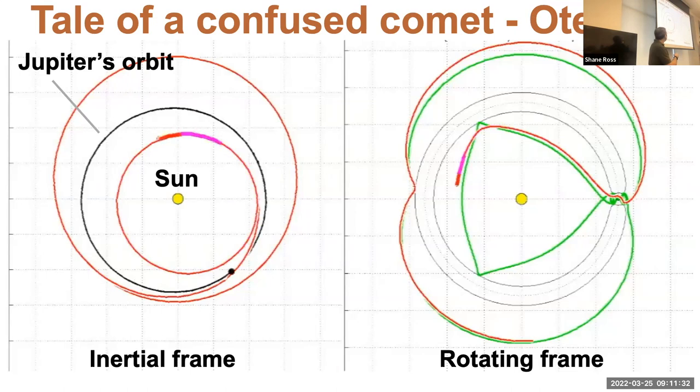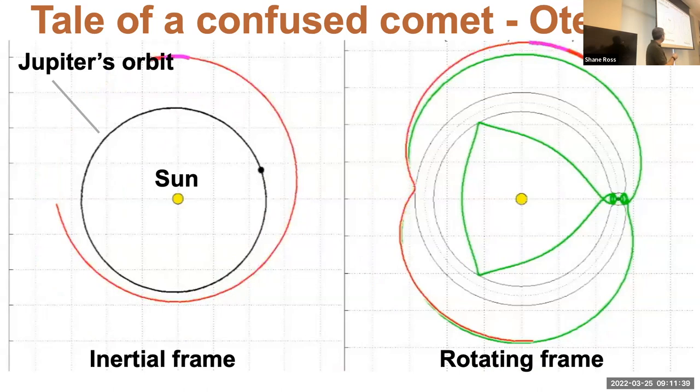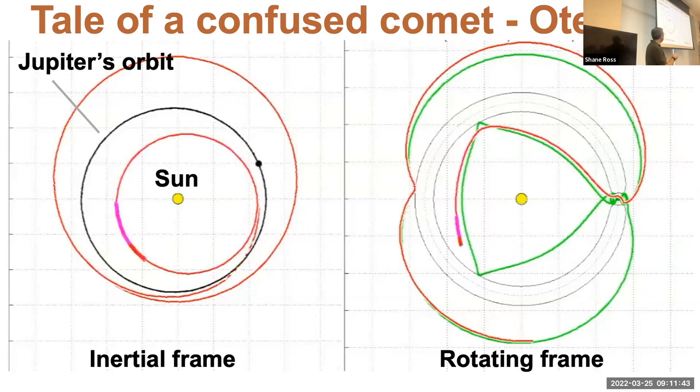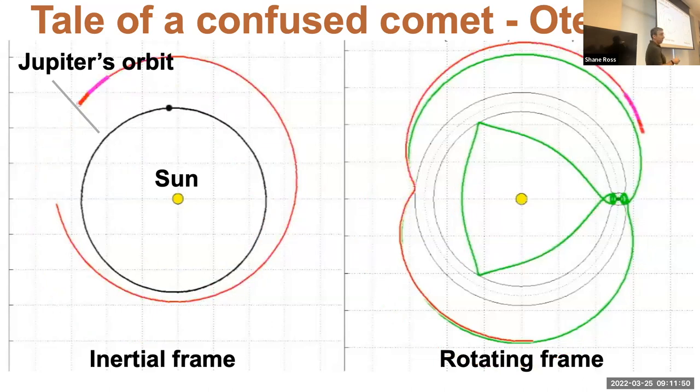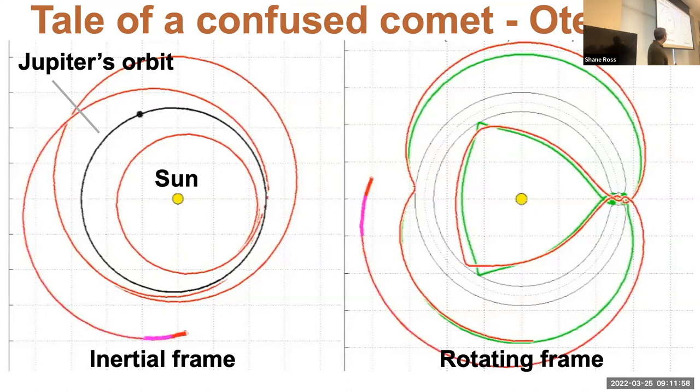Now I'm showing simultaneously the same trajectory in the inertial frame, but viewed now in a frame that's co-rotating with Jupiter. Jupiter's on the positive side of the x-axis, and we've got the sun. You can see it's coming really close, basically to these Lagrange points. Maybe you've heard something about the Lagrange points. It was studying this comet that got me interested.